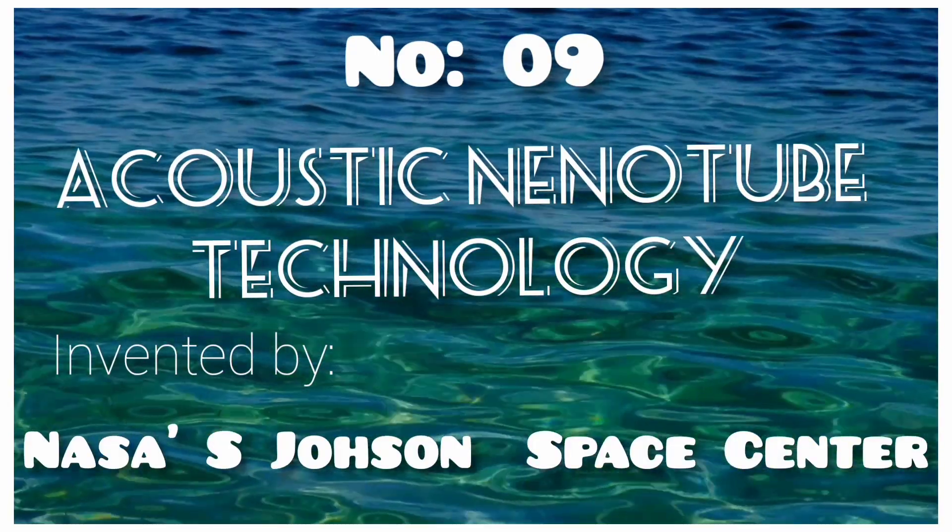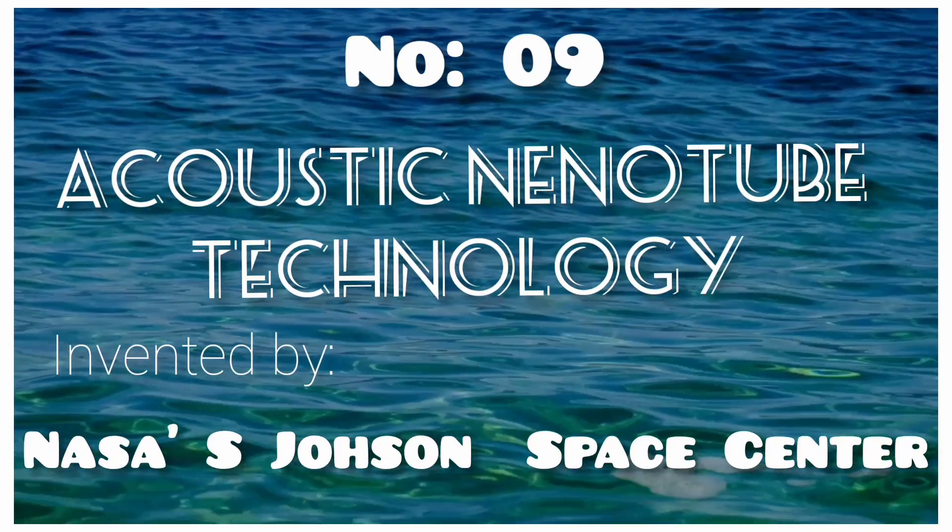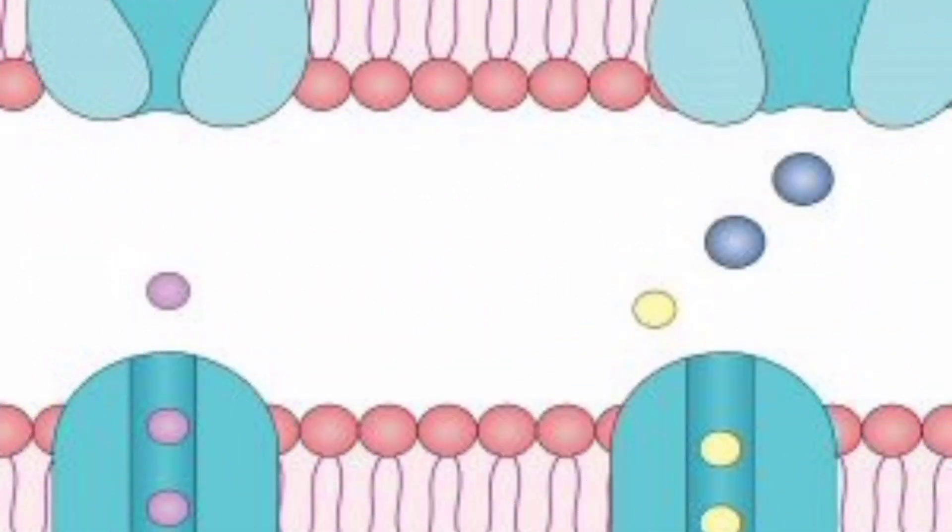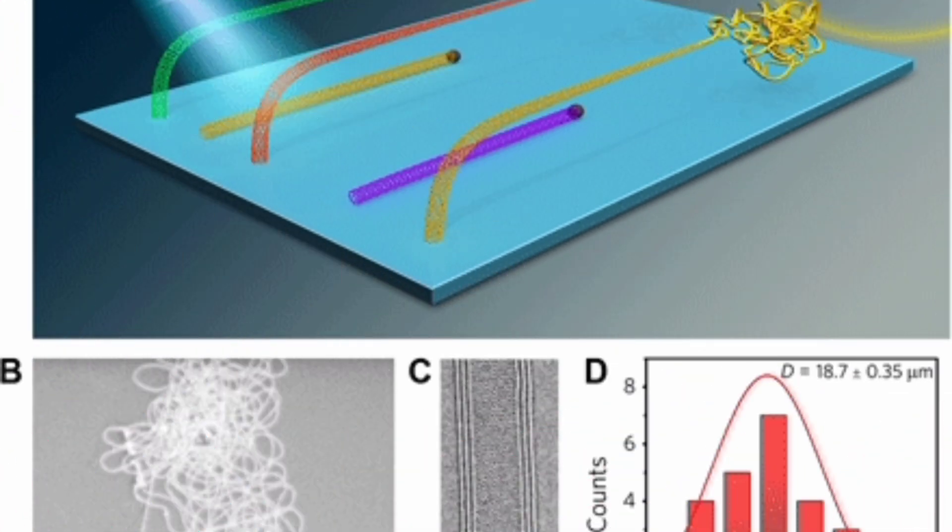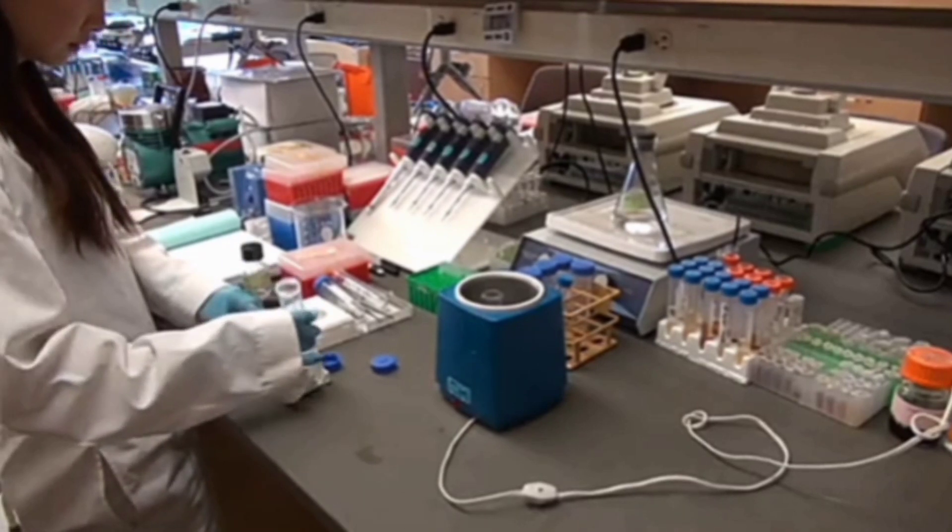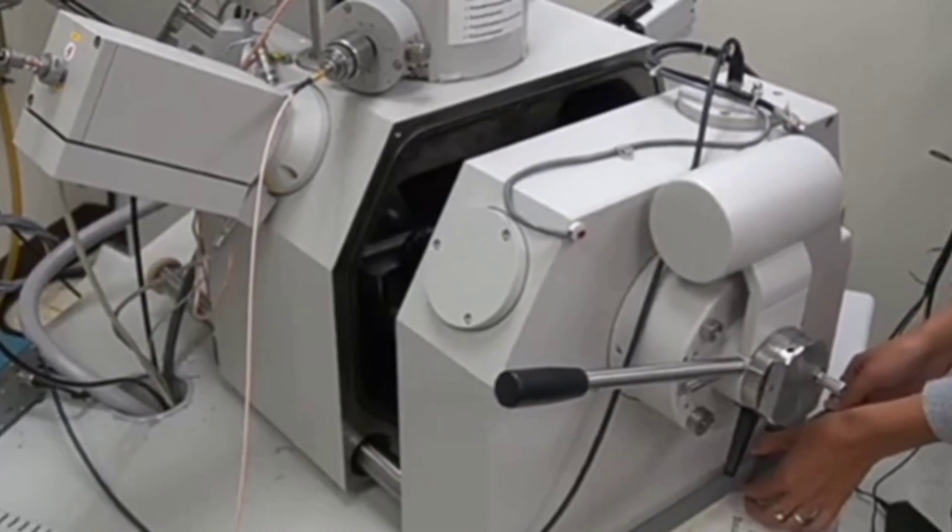Number 9. Acoustic Nanotube Technology. The acoustic nanotube technology was invented by scientists at NASA Johnson Space Center. It applies acoustic waves in place of pressure to direct water through small diameter carbon nanotubes. The technology is based on an acoustically driven molecular screen integrated with carbon nanotubes that allows the passage of water molecules while blocking any larger molecules and contaminants.